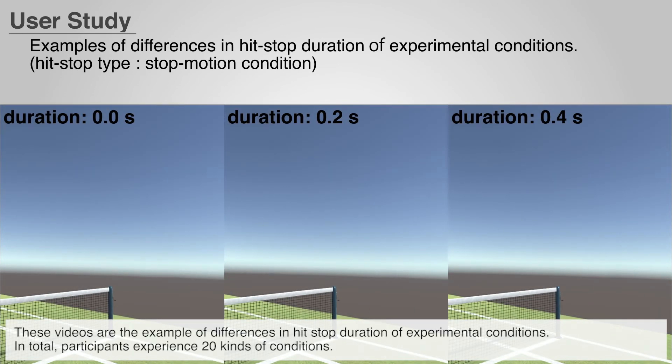These videos are the example of differences in hit stop duration of experimental conditions. In total, participants experienced 20 kinds of conditions.